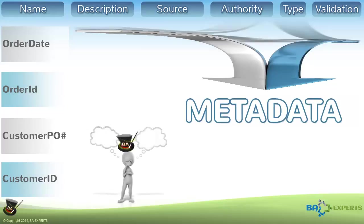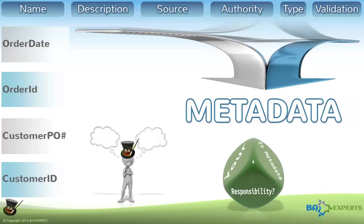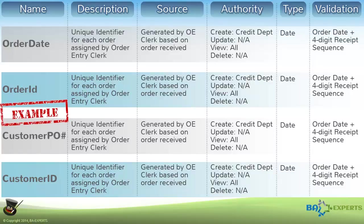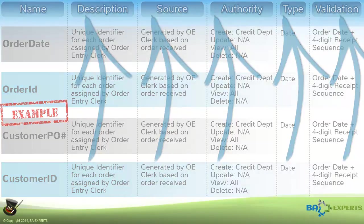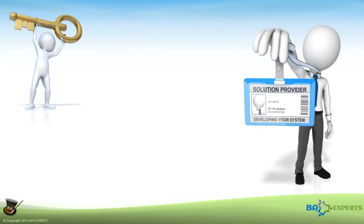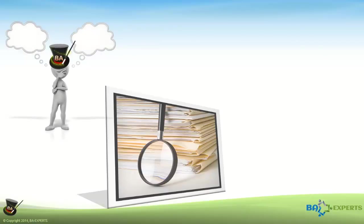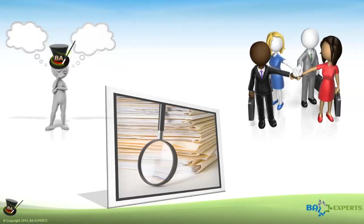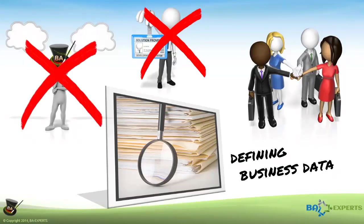Depending on the role you, as the one wearing the BA hat, have on the project, capturing and communicating the metadata may or may not fall into your area of responsibility. If you do have to capture this, I recommend creating a simple spreadsheet containing all relevant metadata about each data element. Obviously, the columns in the spreadsheet can be different based on your organization's needs and the project. The key takeaway here is that solution providers need to know a ton of details about the data that the solution will manipulate. These details can be provided by the one wearing the BA hat or another role — i.e., the one wearing the data analyst hat. Regardless of who is responsible for capturing the data requirements, the business community is responsible for defining them. These decisions should not be left up to the imagination of those tasked with developing the solution or even to the one wearing the BA hat.